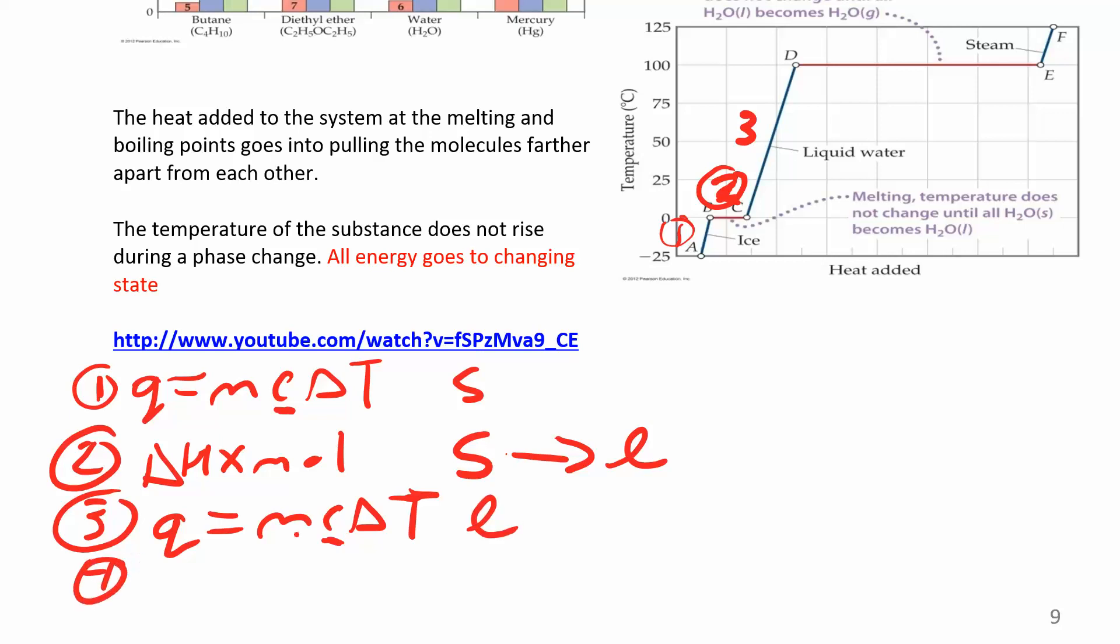In step four, I have another phase change. Now I want my delta H, a different delta H. This first one was my delta H of fusion. This is my delta H of vaporization, because now I'm going from a liquid to a gas. I want to multiply that by the moles. You have to be careful here, because this m is the mass in grams, and these are the moles.